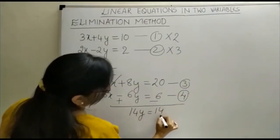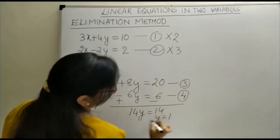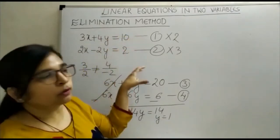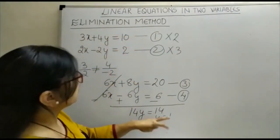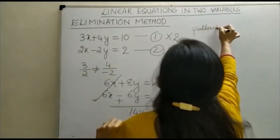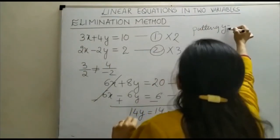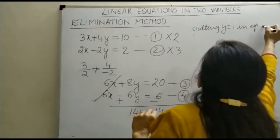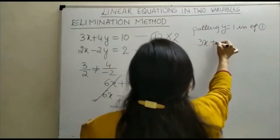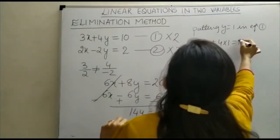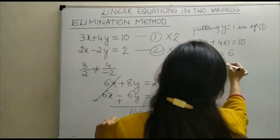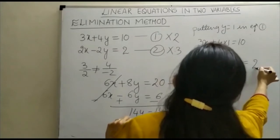Now keep this value y is equal to 1 either in equation 1 or in equation 2. I am going to put this in equation 1. So putting y is equal to 1 in equation 1, you can see 3x plus 4 into 1 is equal to 10. 3x is equal to 6 and x is equal to 6 upon 3, that is 2.